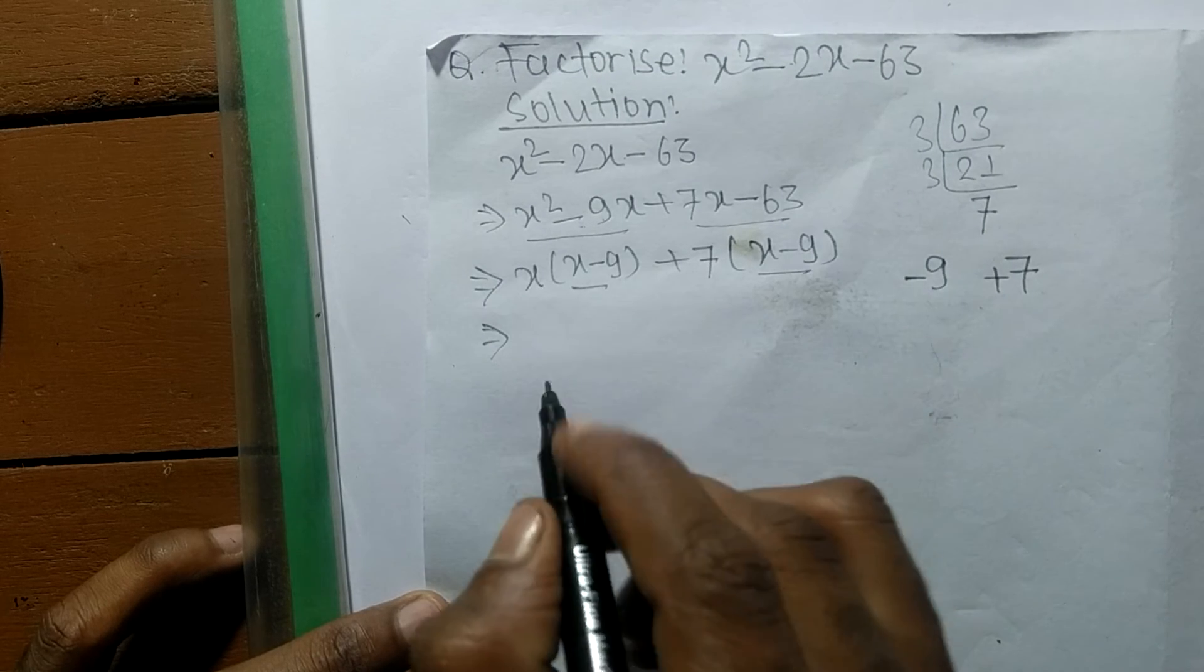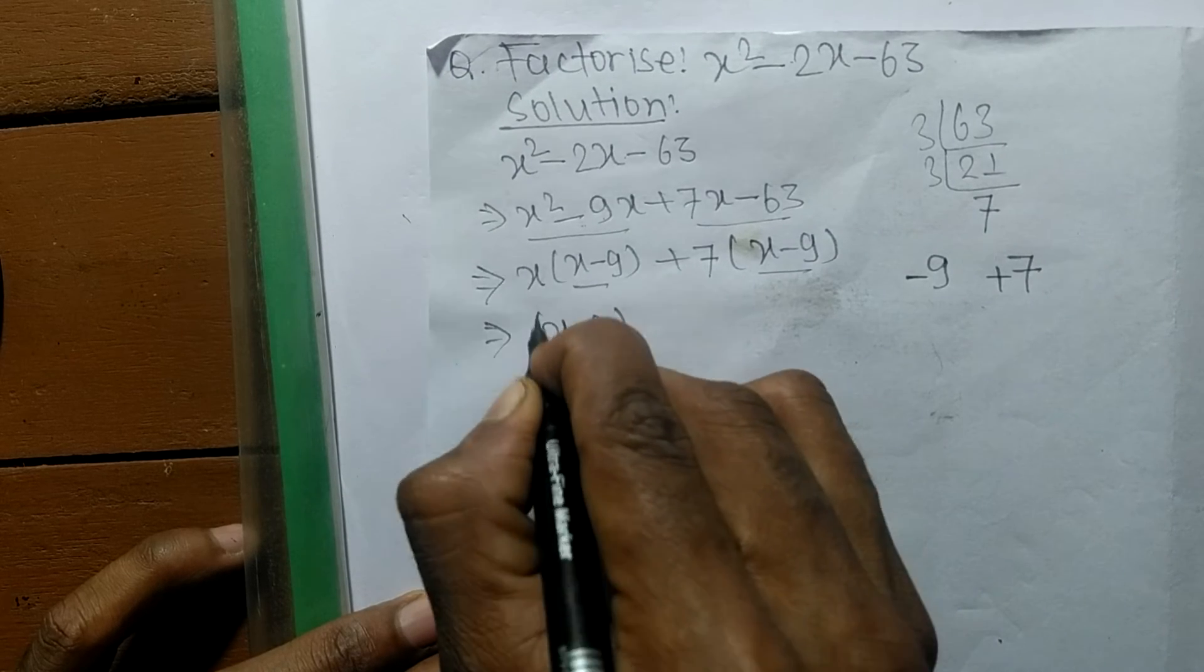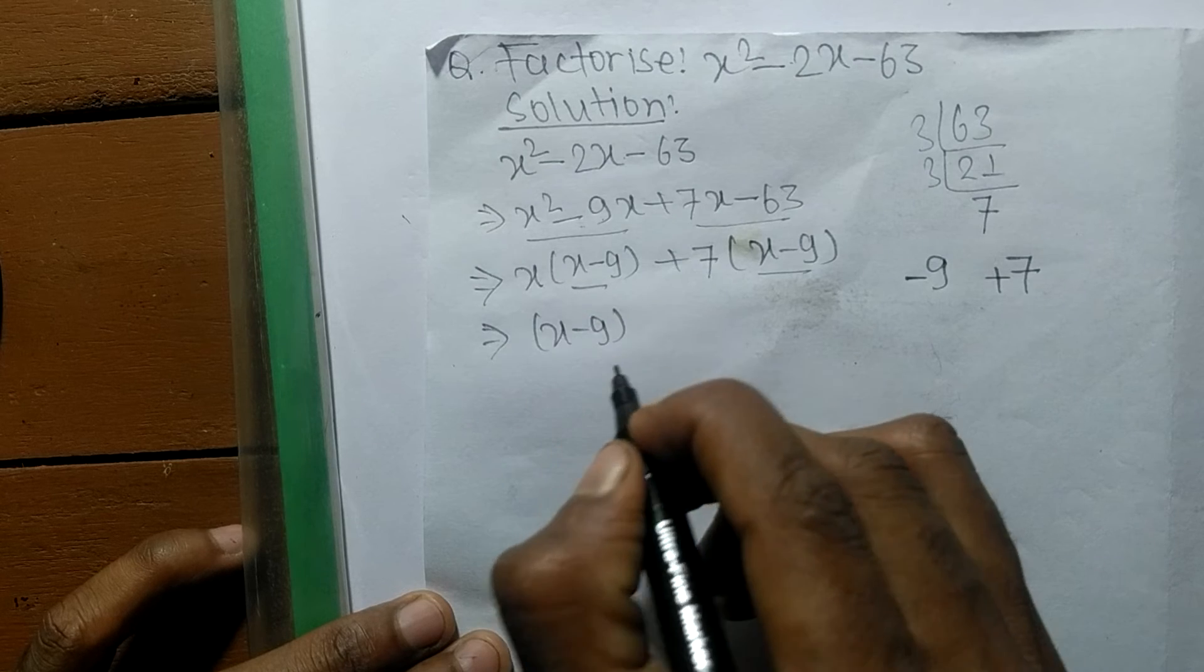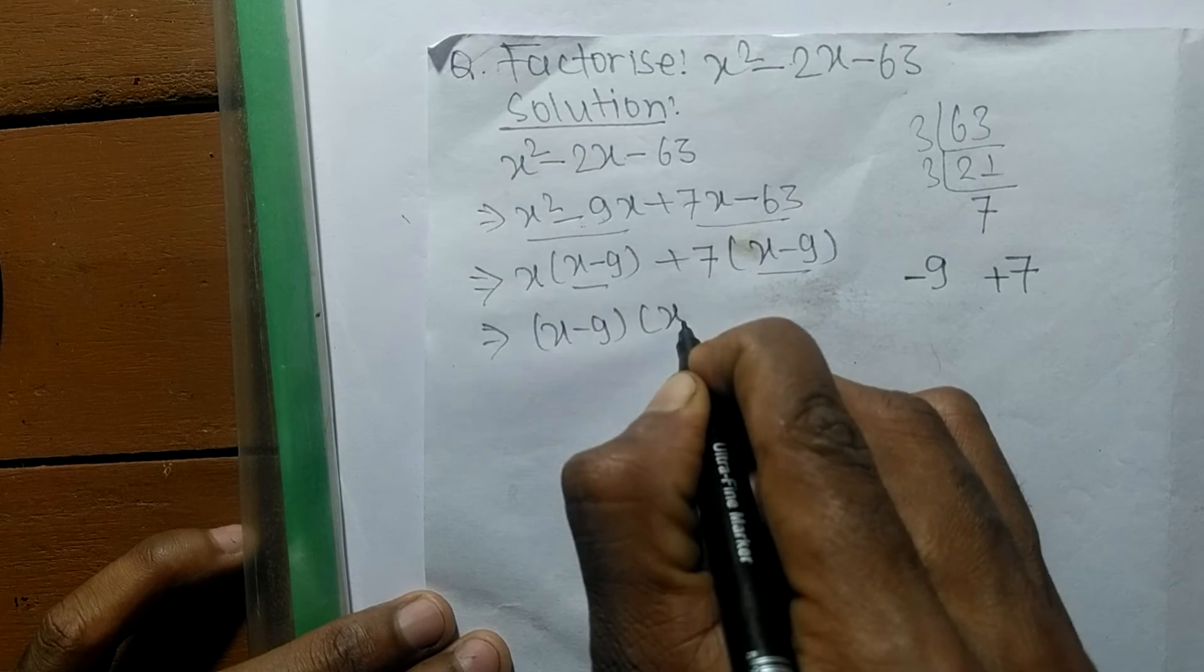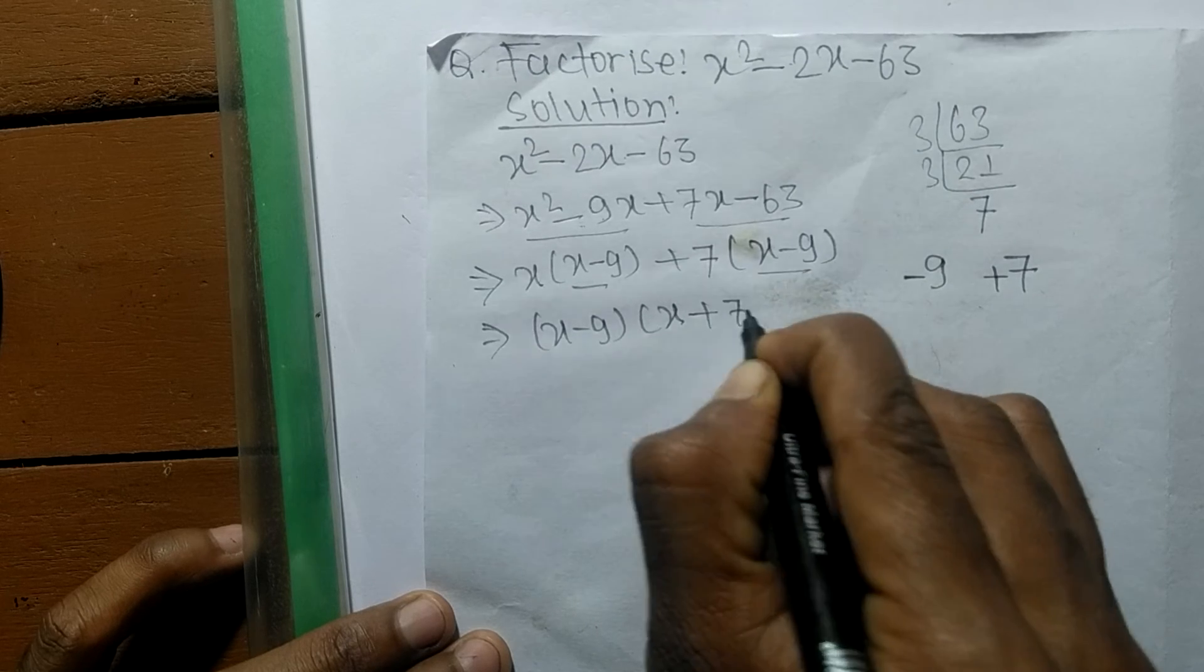Here is x minus 9 and here is also x minus 9, so x minus 9 is common in both. Then the first part, the remaining is x. Like as in second, the remaining part is plus 7.